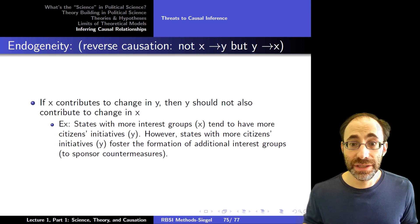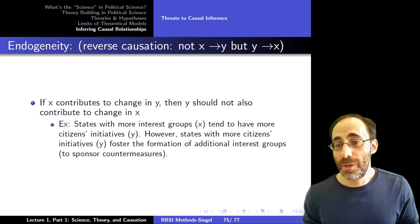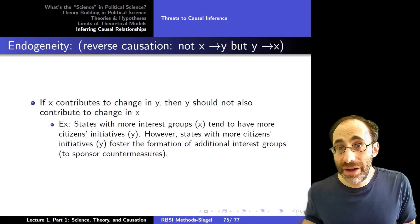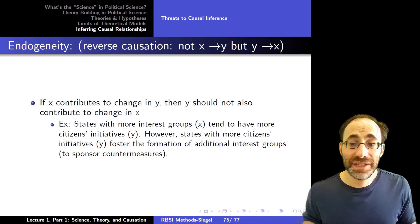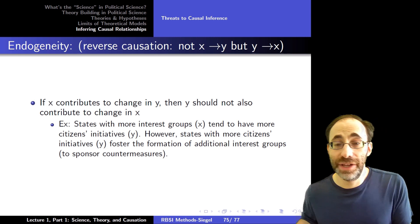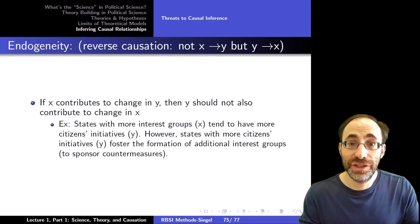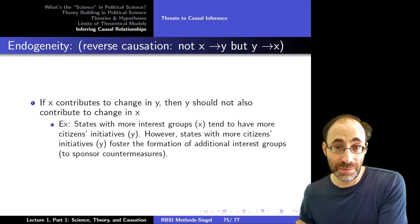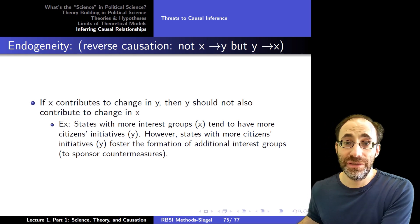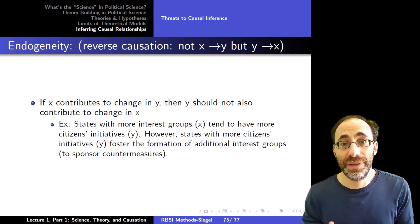So for example, states with more interest groups, the X, tend to have more citizen's initiatives. The theory there would be that the states with the interest groups are able to produce more initiatives. However, it's also the case that the states with more initiatives foster the formation of additional interest groups to sponsor countermeasures. So it's not just that increasing the number of interest groups increases initiatives, which it might, but also there's feedback. And now the number of initiatives leads to more interest groups, and that makes assessing causality more complex.